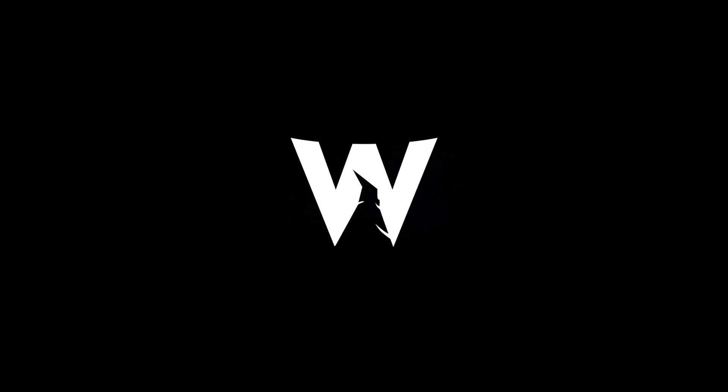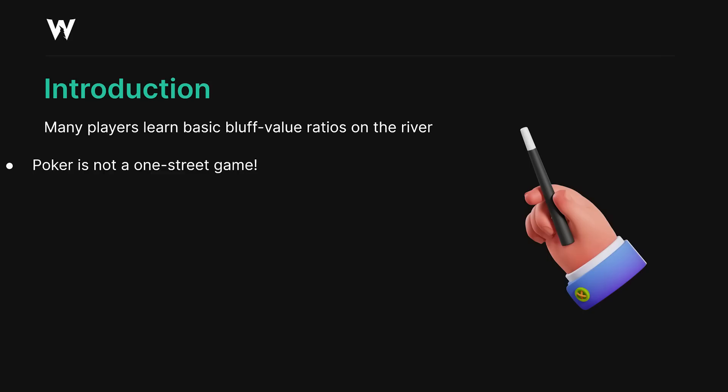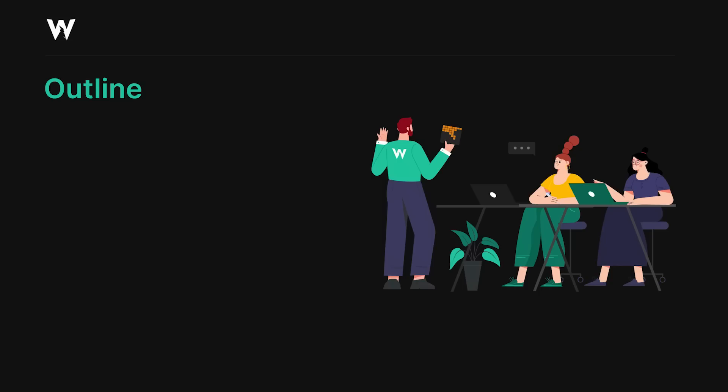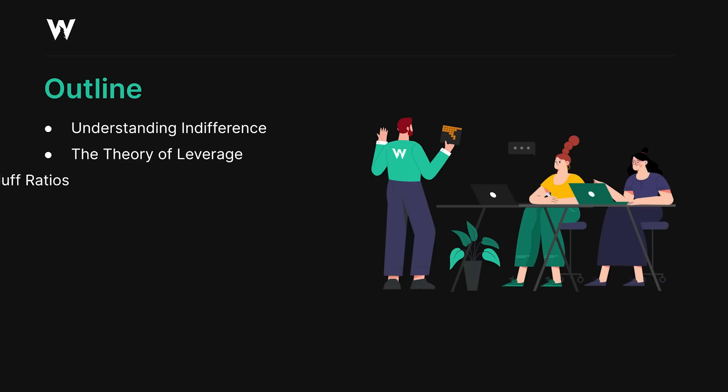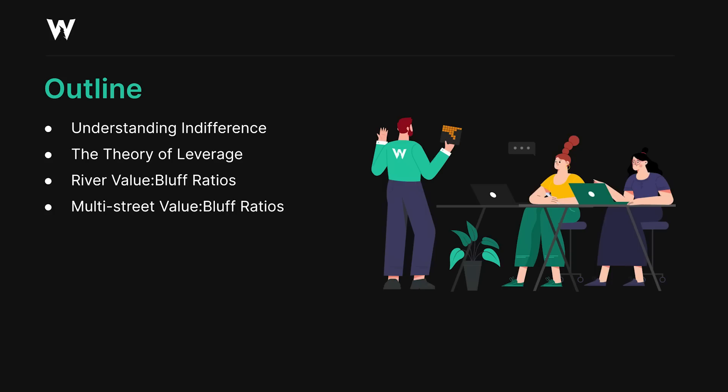Many players learn the basic bluff-value ratios on the river, but poker is not a one-street game. There are multiple betting streets, and each street compounds these effects, allowing you to bluff more and more often, assuming you're using a polarized range. In today's lecture, we're going to cover indifference, the theory of leverage, how to calculate value-to-bluff ratios on the river, and finally how to work backwards from the river to calculate these numbers on the turn and flop as well.